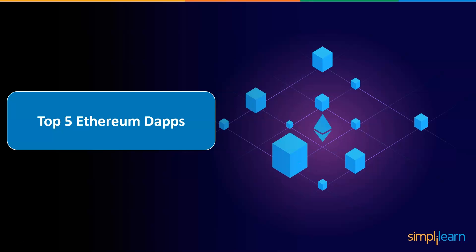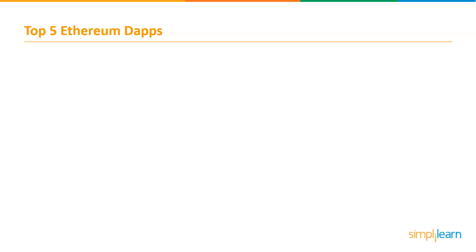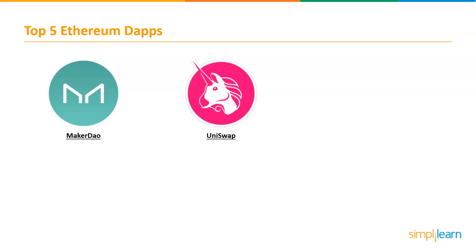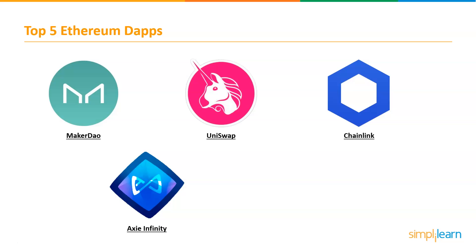Now let me take you through the five best Ethereum DApps projects. MakerDAO — an Ethereum-based protocol that creates the DAI stablecoin and allows for collateral-backed loans to be made without the use of a middleman. Uniswap — a decentralized cryptocurrency exchange protocol. Chainlink — a blockchain oracle network that is completely decentralized. Axie Infinity — a blockchain-based trading and battling game that lets its players gather, breed, raise, battle, and trade token-based entities called Axies.